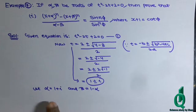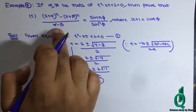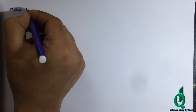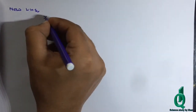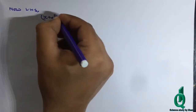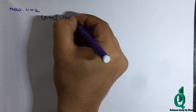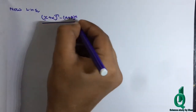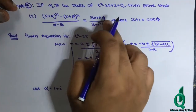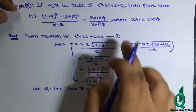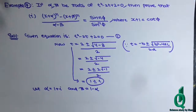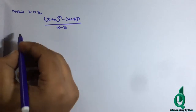Left hand side pick करते हैं: (x + α)ⁿ - (x + β)ⁿ upon (α - β). इसको हमने sin(nφ) upon sinⁿ(φ) बनाना है, where x + 1 = cot(φ)। हमें x + alpha चाहिए।